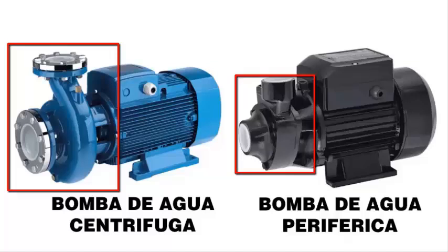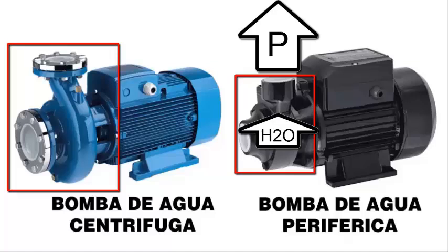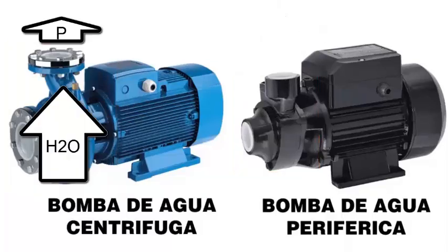3. Impeller Size and Efficiency. The impeller of a peripheral pump is smaller, but its design allows it to achieve high pressures without needing large diameters. This makes it ideal for low-flow, high-pressure applications. Centrifugal pumps need larger impellers or higher speeds to generate equivalent pressures, which is inefficient for low-flow applications.